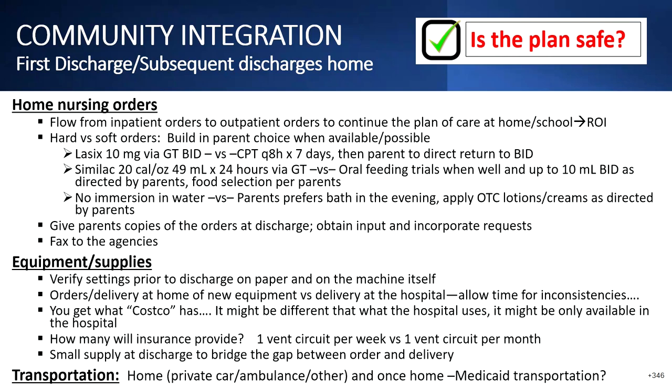Verify settings on the machine itself. When kids come to clinic, I would say about once every one-and-a-half vent clinics, there are the wrong settings on the machine — it happens all the time. Sometimes RTs change the settings, such as alarms, so we don't get frequent alarms. We have to check the machines before they go home to make sure they're set as ordered. Some of that applies to oxygen and oximeters as well.